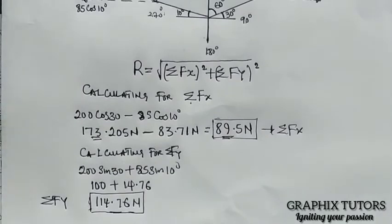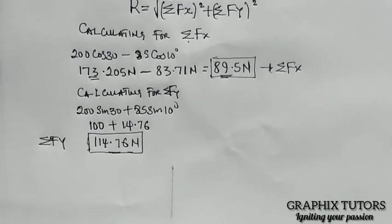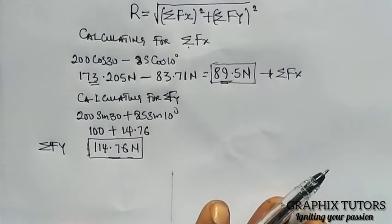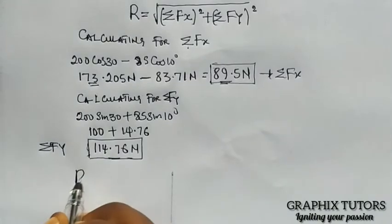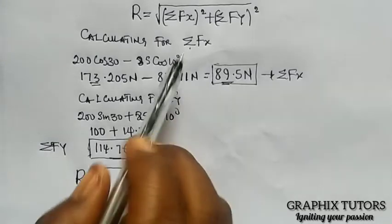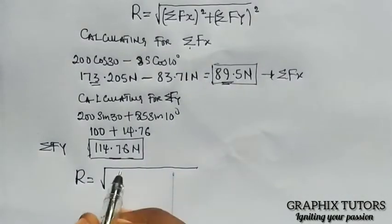Now, if you place them into the formula here, my resultant force will now give me the square root of, I'm going to write F of x, 89.5 square